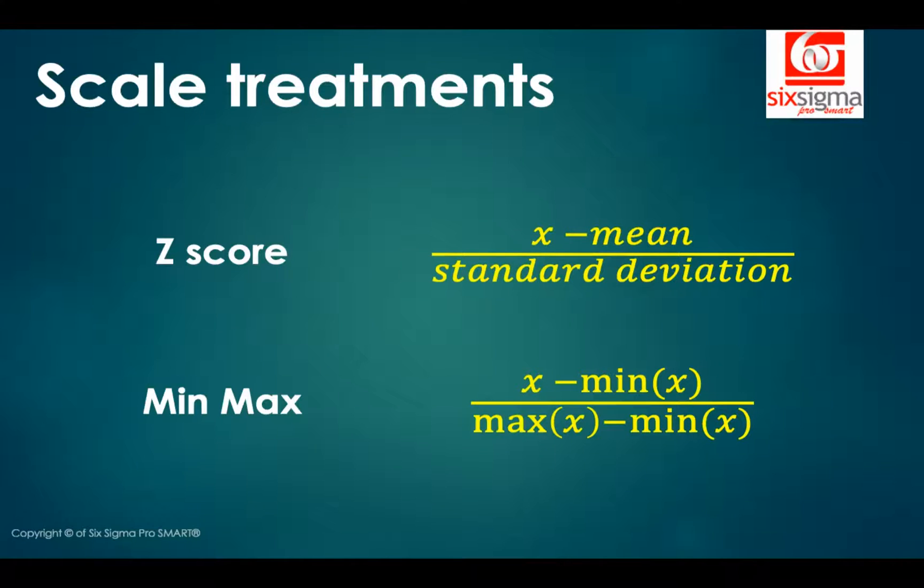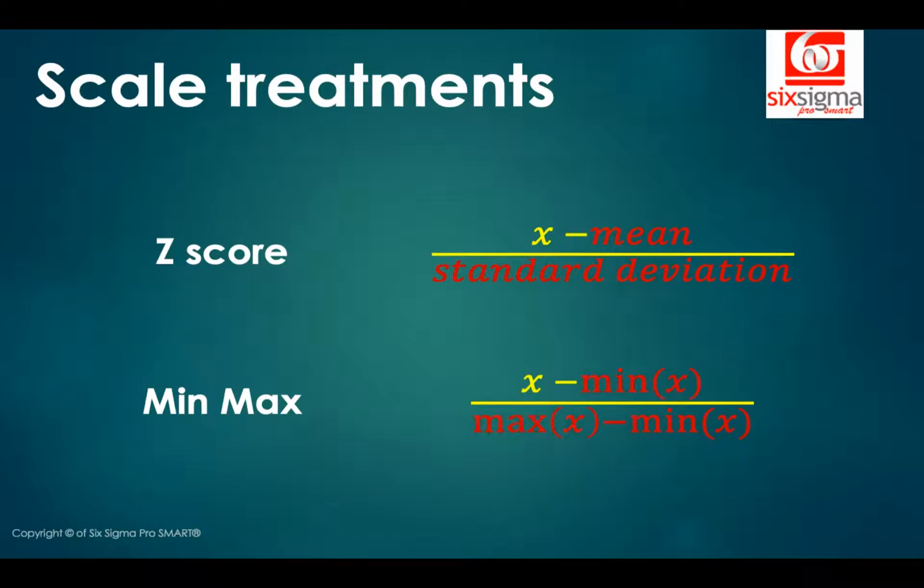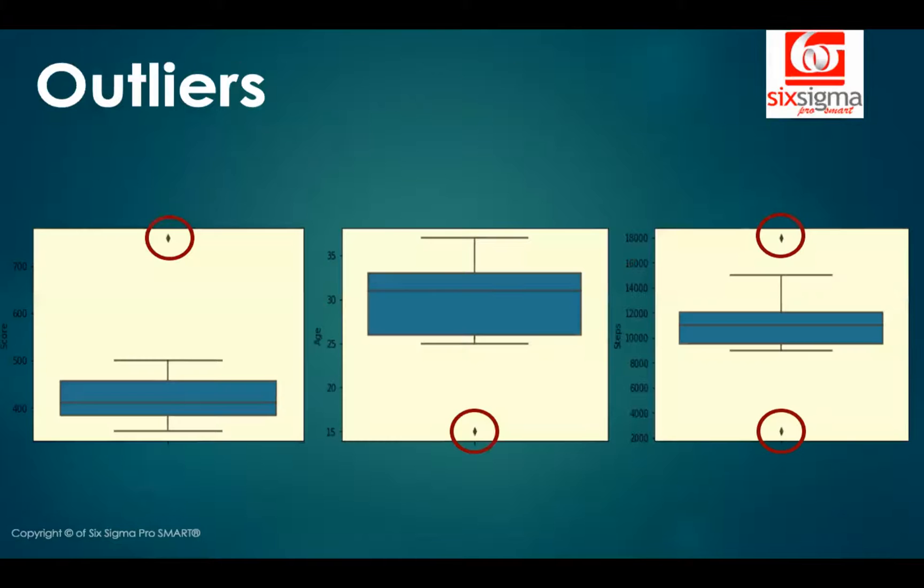Why can't we do scaling before outlier treatment? So just some time back, we discussed why mean and standard deviation are not reliable when you have outliers or missing values in the data. And here we see scaling actually uses mean and standard deviation. And that's why it is not a good idea to proceed with z-score transformation when you have outliers or missing values in your data. But what about min-max scaling? Why is this a problem?